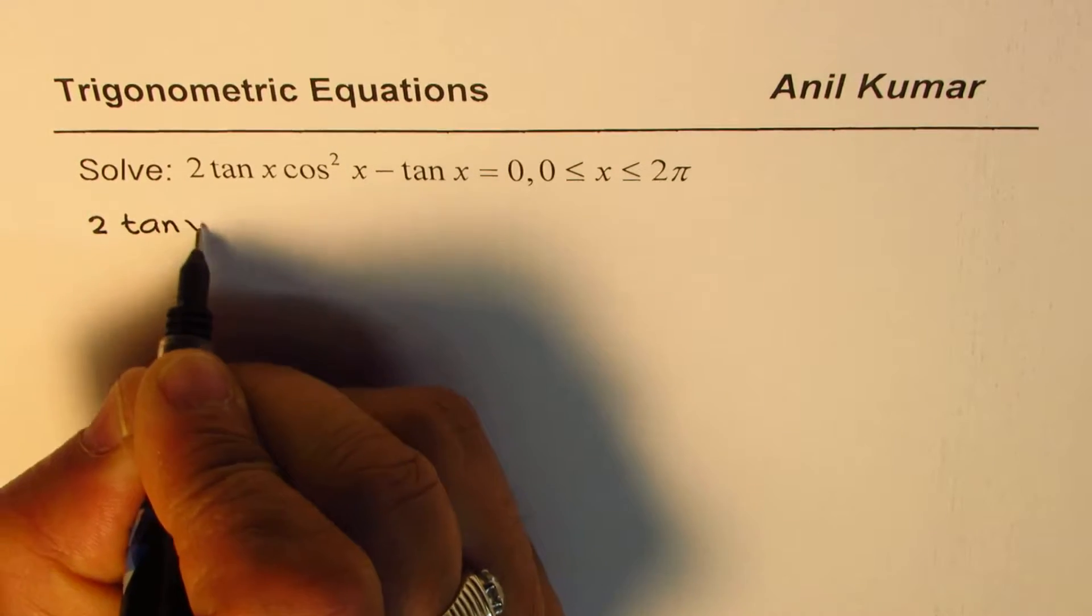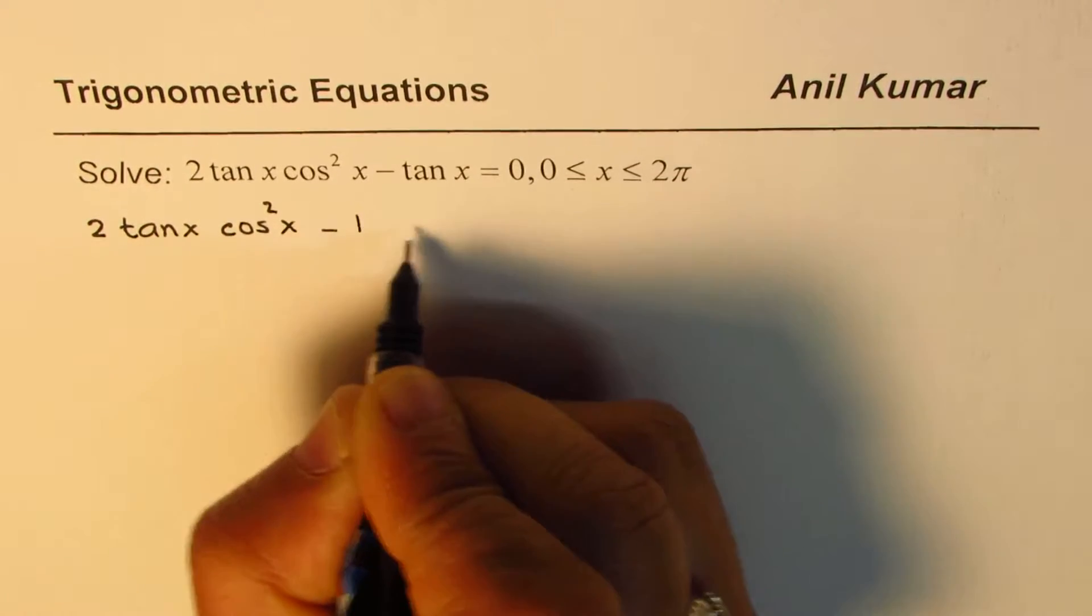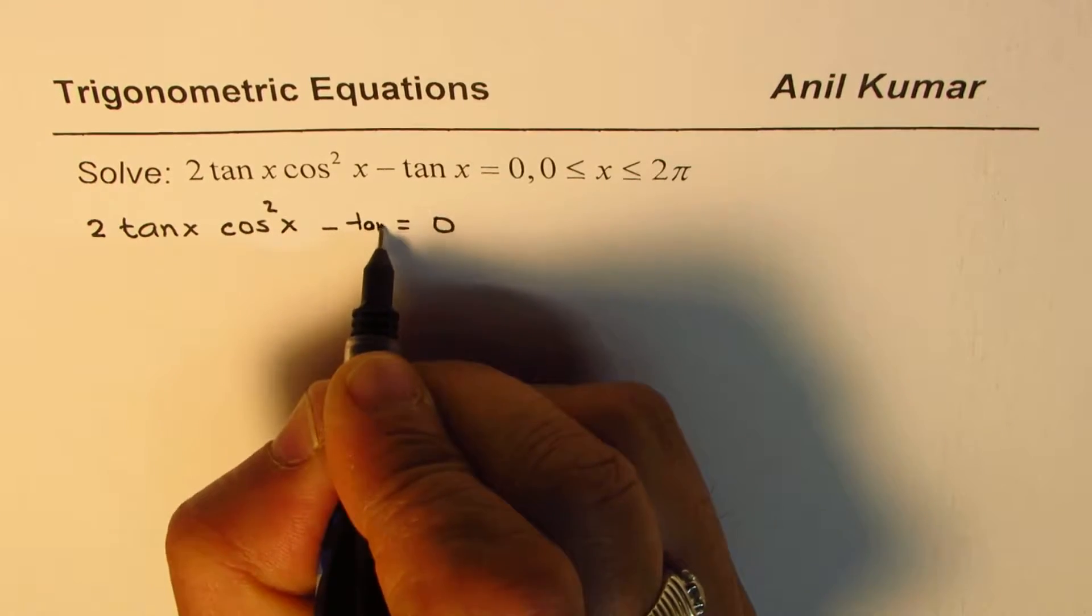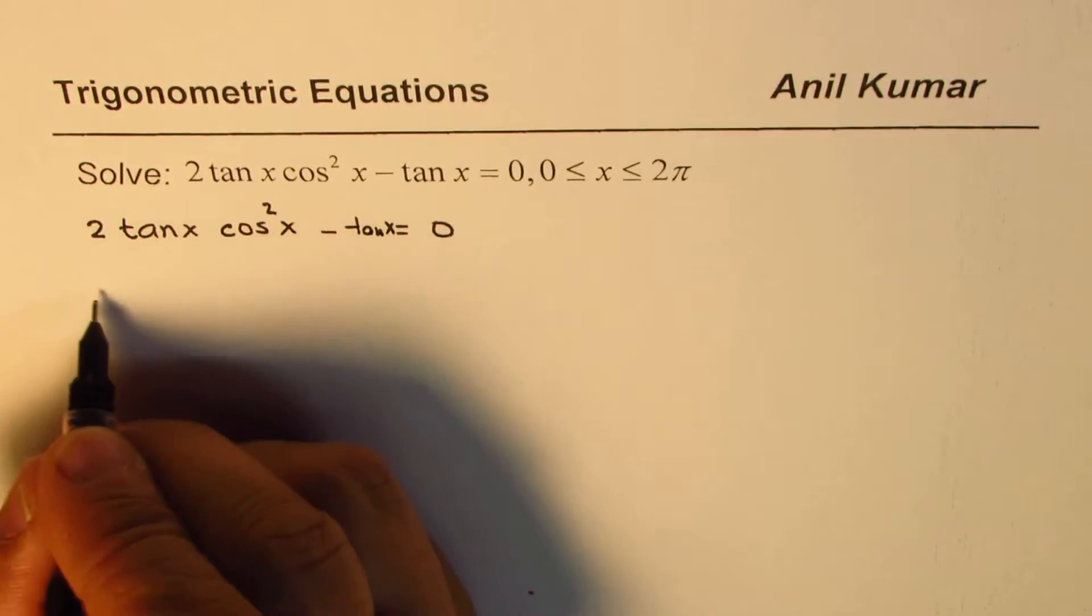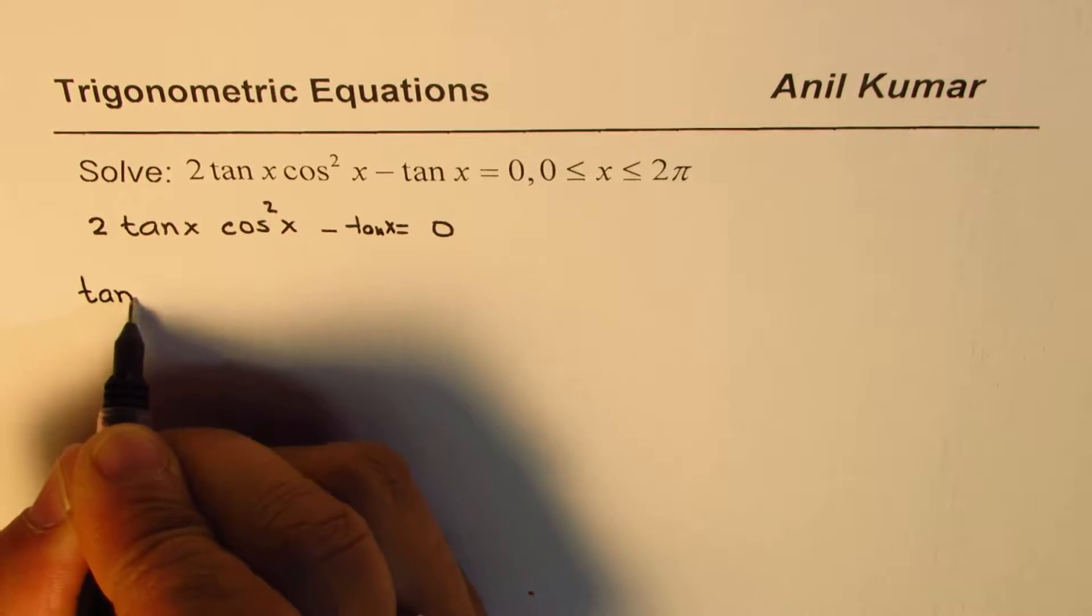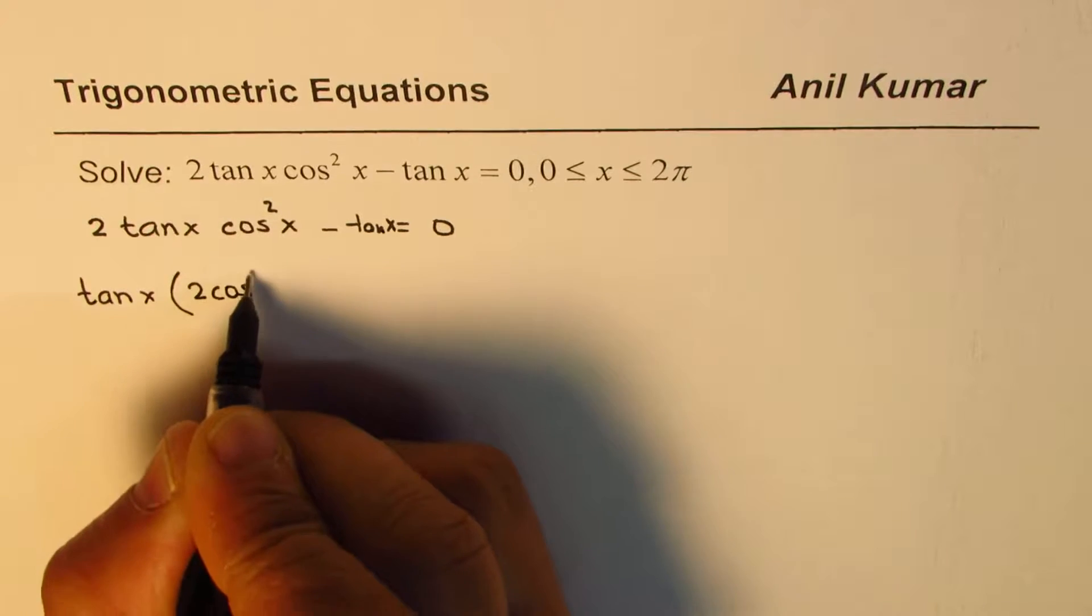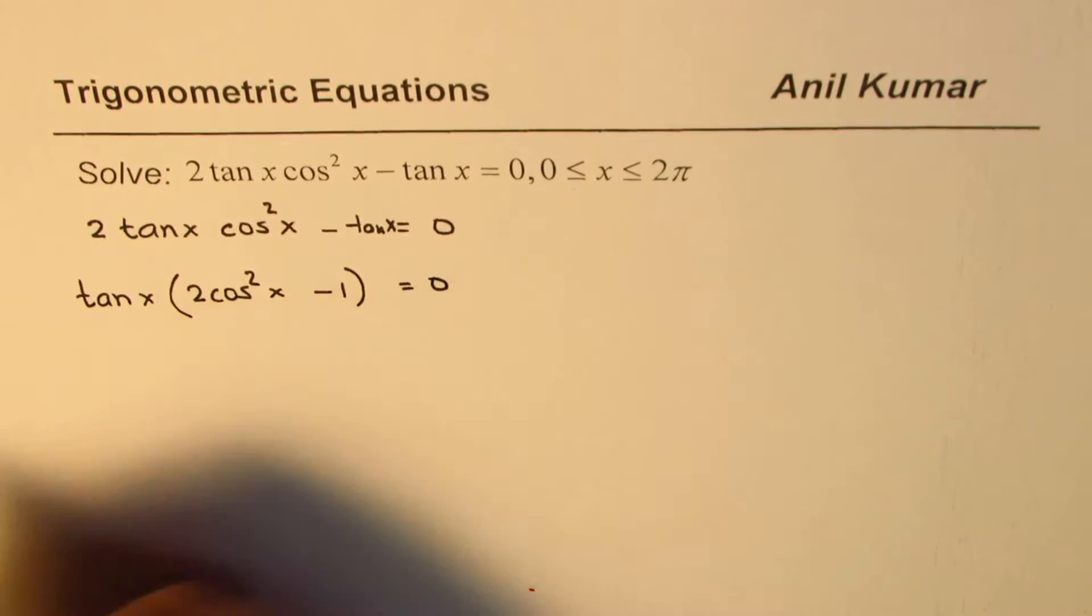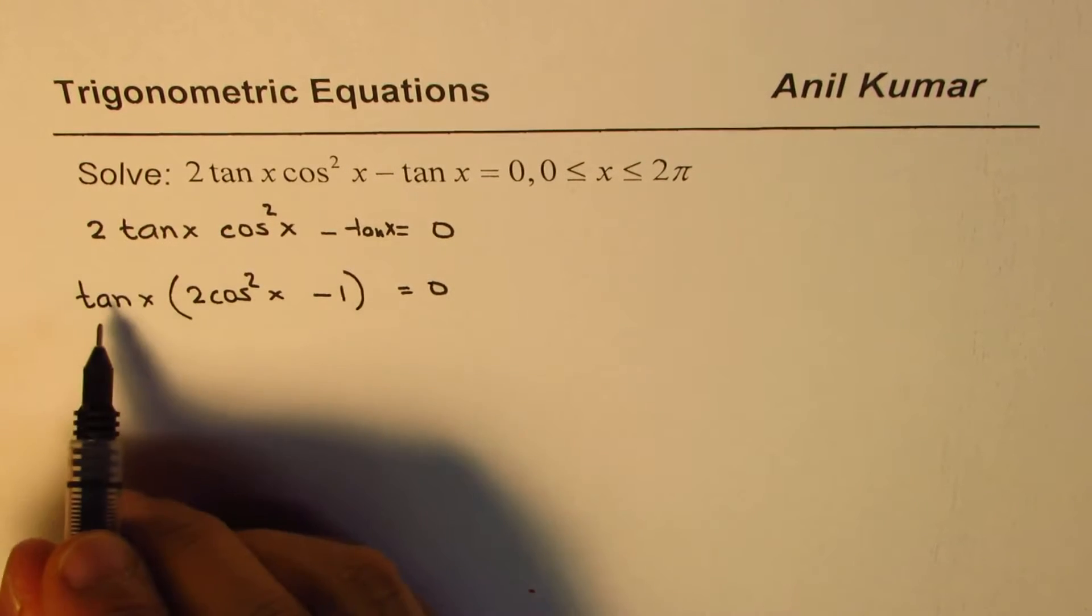Let me rewrite the equation, which is 2 tan x cos²x minus tan x equals 0. Now we can factor tan x from this equation, so you get tan x times (2 cos²x minus 1) equals 0.